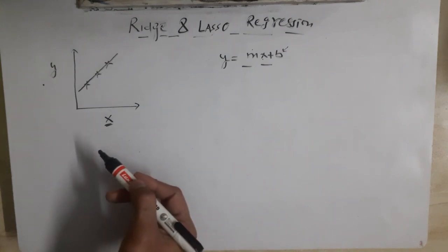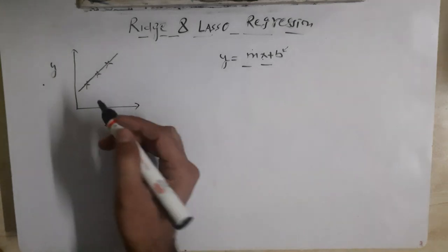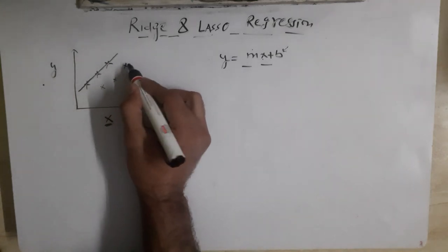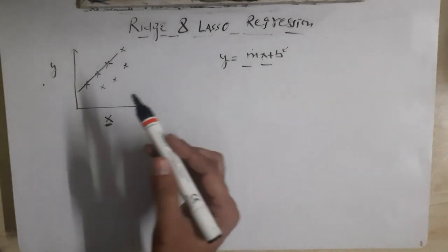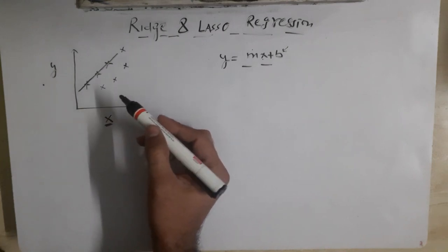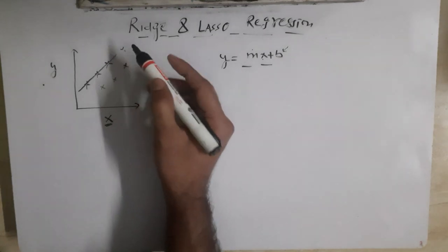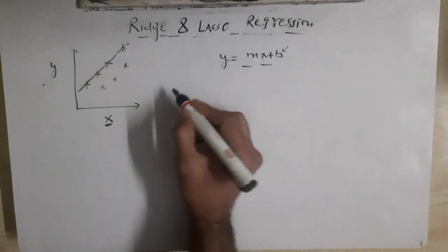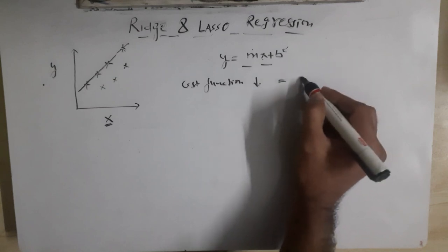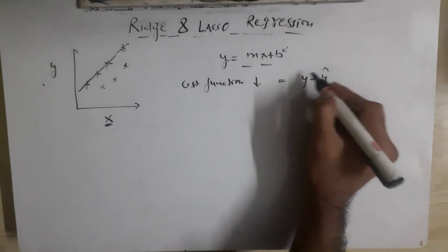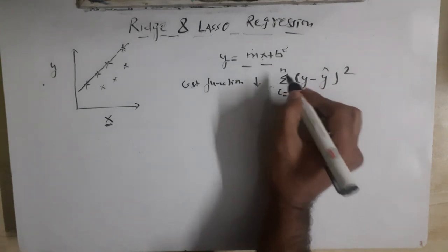Suppose that during training we found this best fit line, but during testing we got some data points somewhere else. Using the same model and same line we try to predict, but our model will fail miserably — because during the training phase it found the exact best fit line, and due to that our cost function was very minimum. Our cost function is generally represented as the summation of (y minus y-hat) squared.